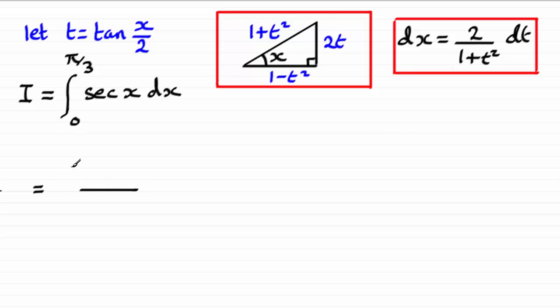So we're going to have the integral then of 1 plus t squared over 1 minus t squared. So that's the substitution for sec x. Then we've got to substitute for dx and we take this result here. So that's going to be 2 over 1 plus t squared, and we have the dt on the end.